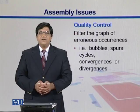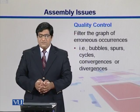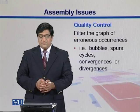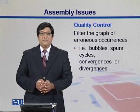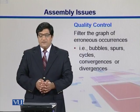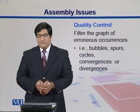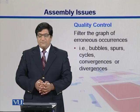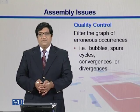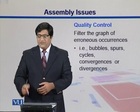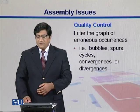So how can we control issues like these — bubbles, spurs, cycles, convergences or divergences? One thing we can do, if we can afford it, is filter the graph of these erroneous occurrences. We can simply discard or throw them away.